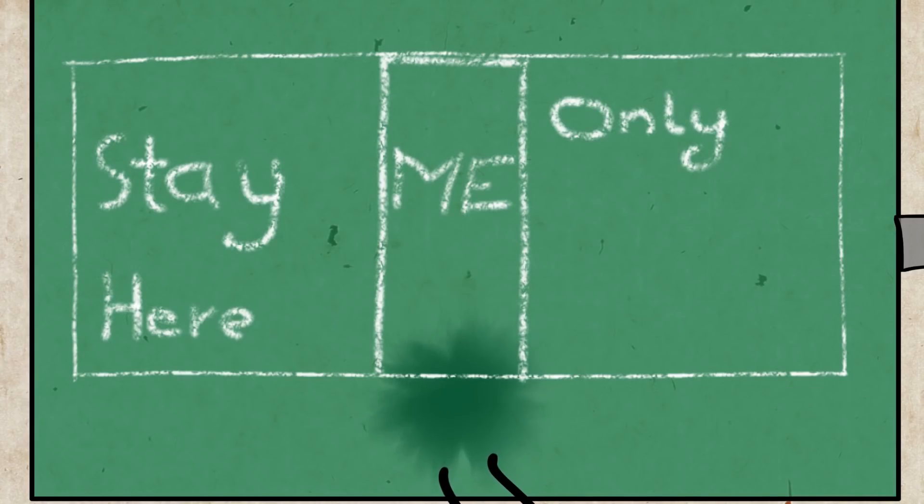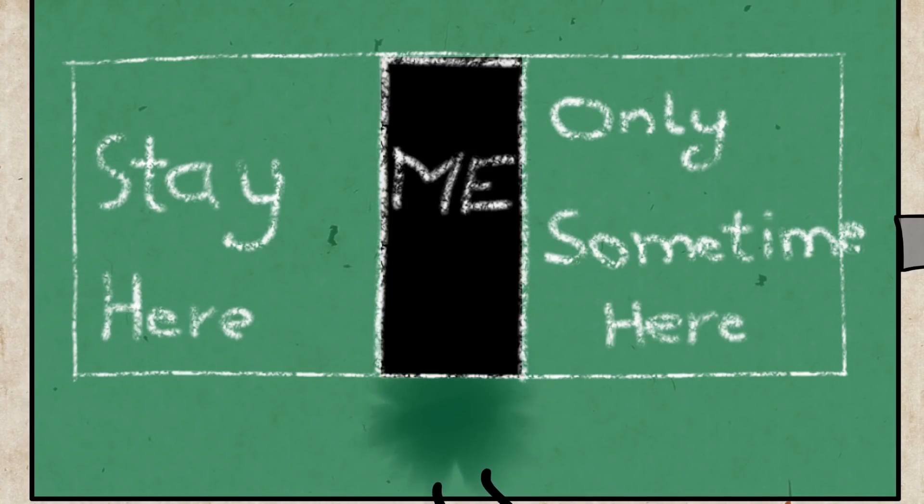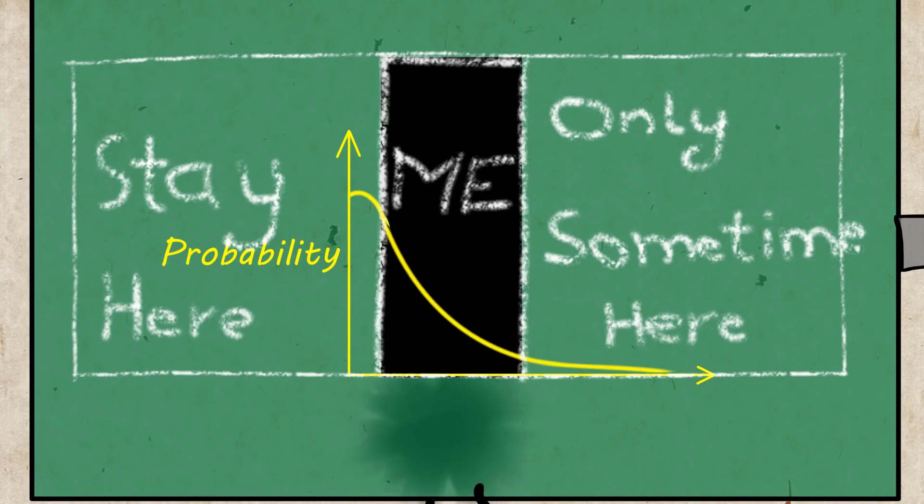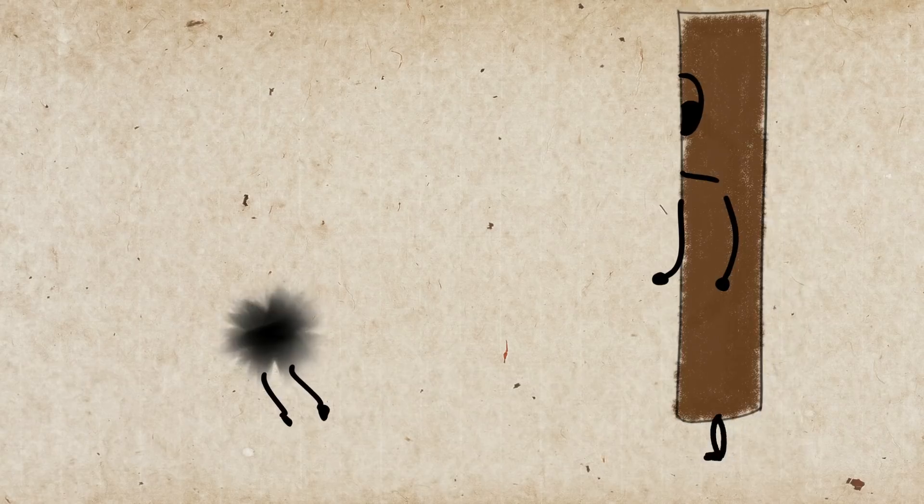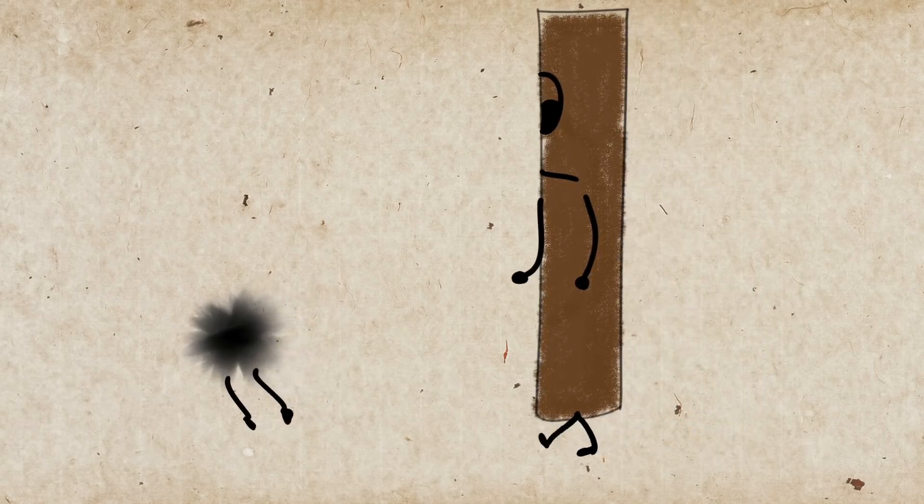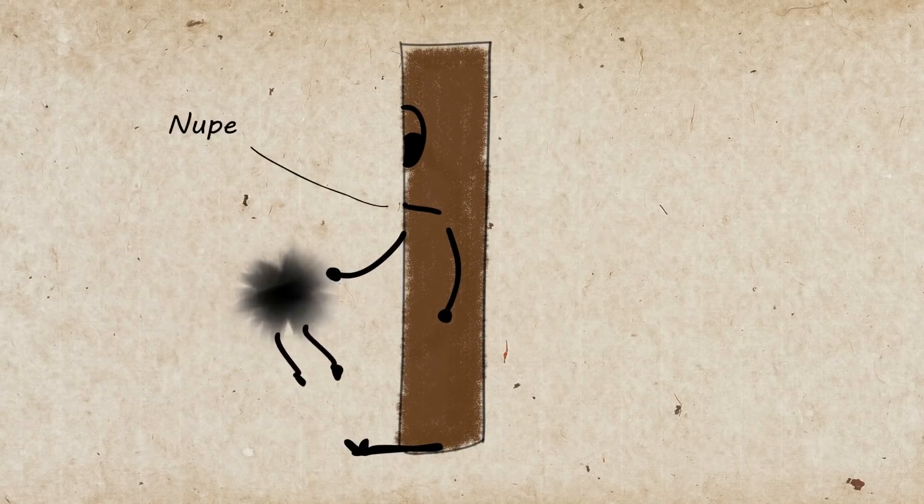This probability decreases exponentially across the barrier. So the particle is more likely to be found in this confined region. But it also has a tiny probability of being found outside this barrier. This is what we refer to as quantum tunneling.